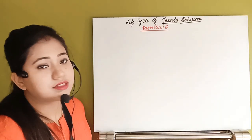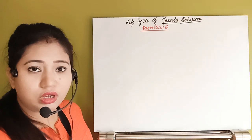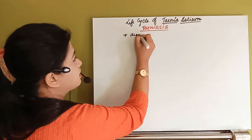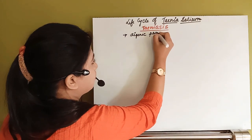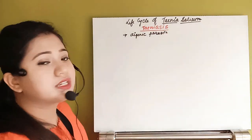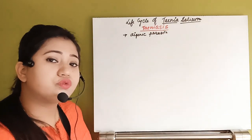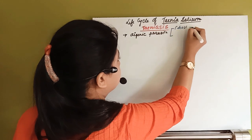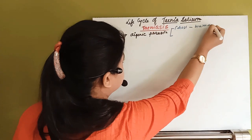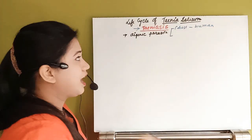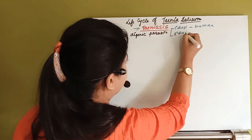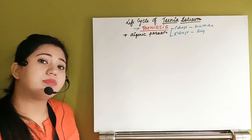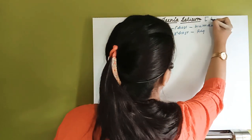In the case of Taenia solium, the organism is also a digenetic parasite. Being a digenetic parasite means it completes its life cycle in two hosts. The two hosts here are: the primary host is human — so it causes taeniasis in the human body — and the secondary host is the pig. That is why this worm, Taenia solium, is also known as the pig tapeworm.